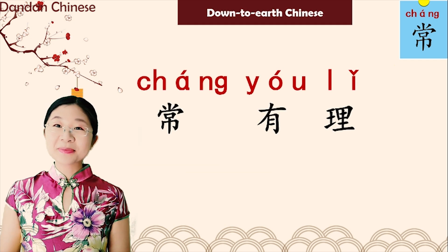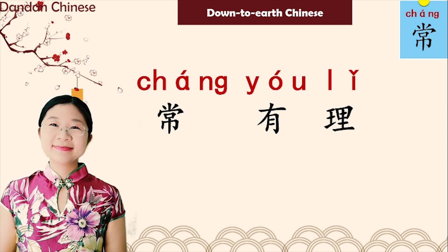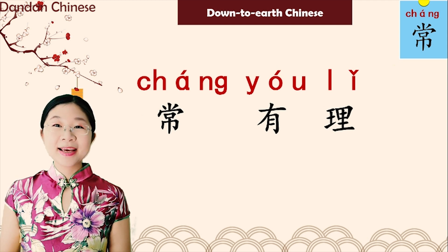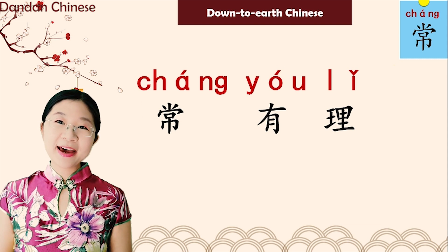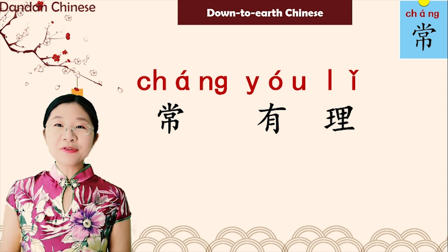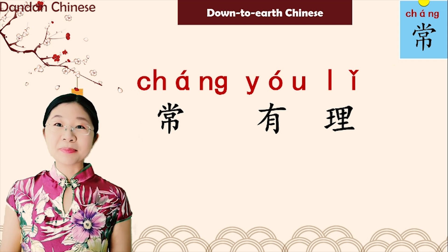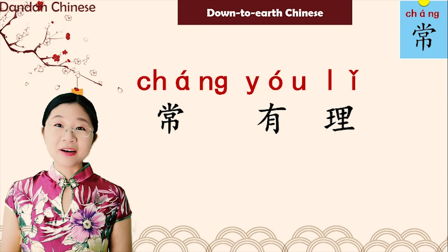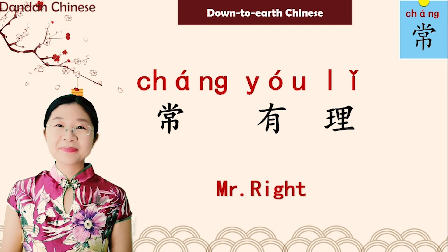Let's learn some down-to-earth Chinese with 常. This is 常于理 (cháng yú lǐ). 常 means 'often/frequent,' 于 means 'half,' 理 means 'reasonable.' So it describes people who always think they are right — we call this kind of person 'Mr. Right.' This is not good!